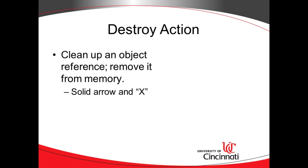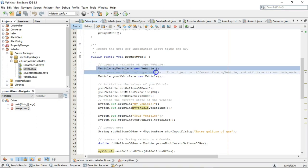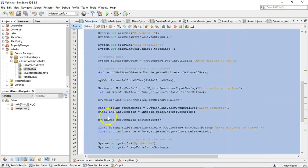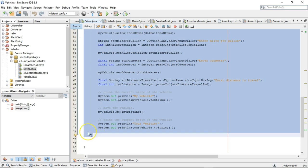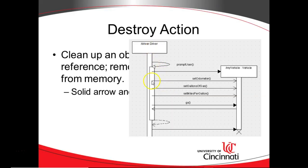Finally, we look at a destroy action, often used to clean up memory. One object destroys another by essentially taking it out of scope. Scope means a variable is alive from the point it is declared until the closing curly brace of the block where it's declared. In our prompt user method, myVehicle is declared on line 30 and available throughout that method, but we deallocate it at line 77. In UML, we go from one lifeline to another, and the object being reclaimed terminates with an X.